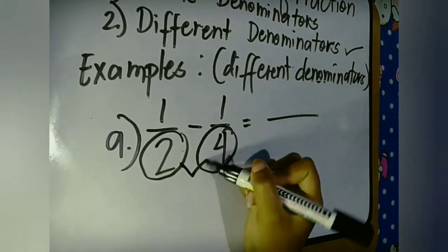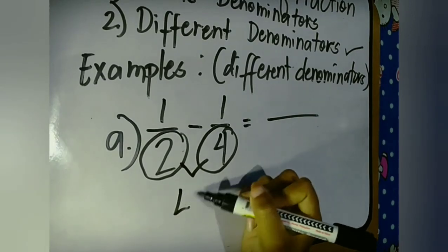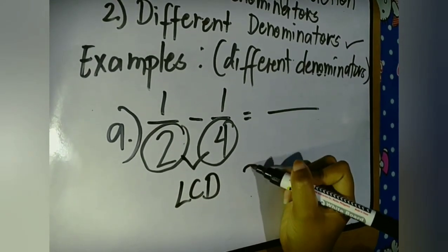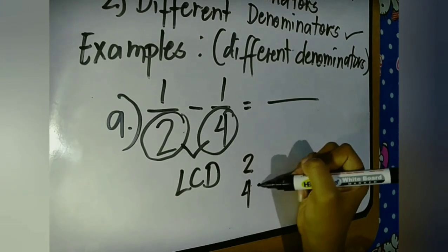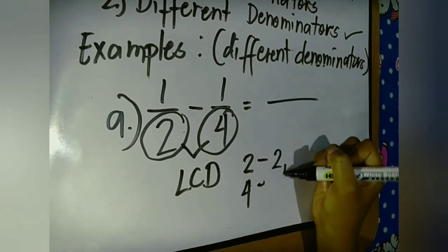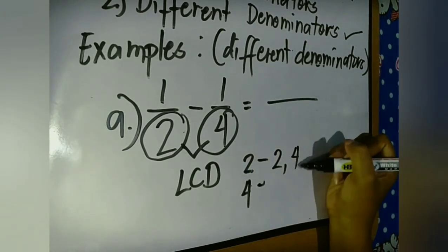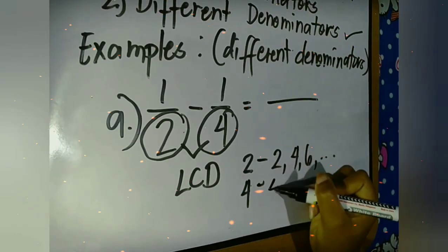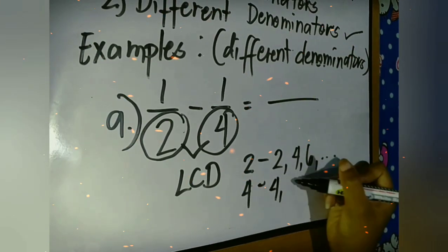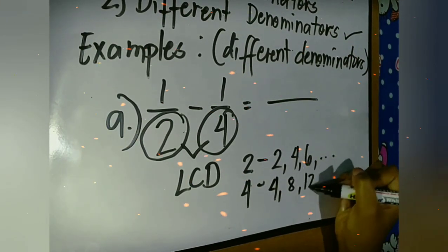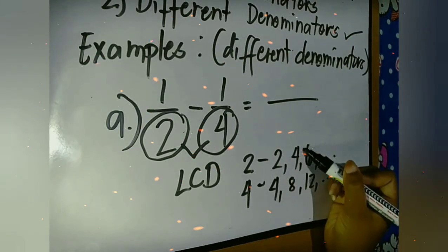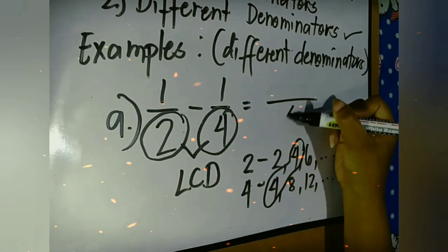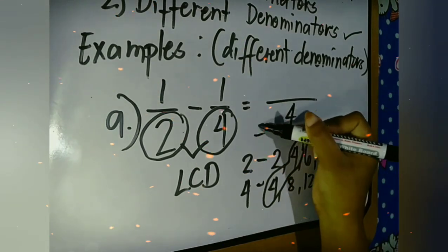Since both denominators are different, we must find the LCD, or the Least Common Denominator. We list all the factors of two and four. The factors of two are two, four, six, and so on. The factors of four are four, eight, twelve, and so on. So the LCD is four.